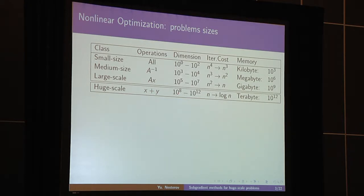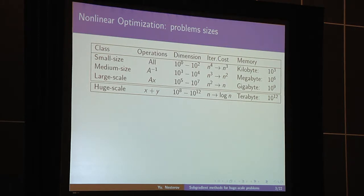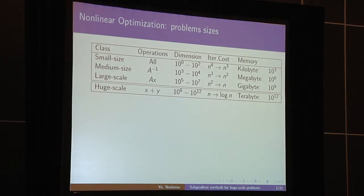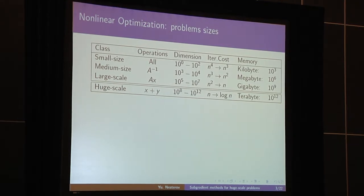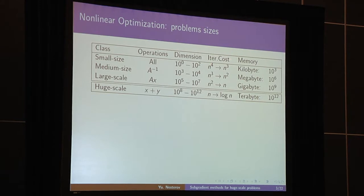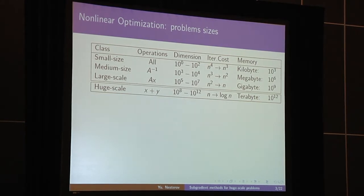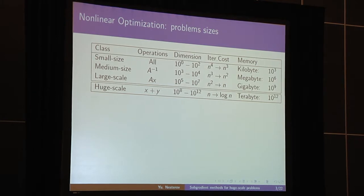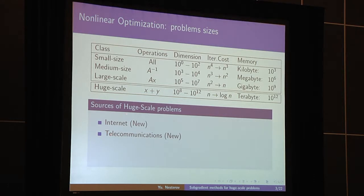If we do a full vector operation at each iteration, then we will never finish the computation. Here we need to speak about algorithms with sub-linear iteration cost, meaning the dependence of complexity of each iteration on dimension should be logarithmic. Looking at the applications where we can have problems of this size, there are two new sources: internet and telecommunications. But also, we have traditional sources of huge-scale problems: finite element schemes, partial differential equations, and so on.